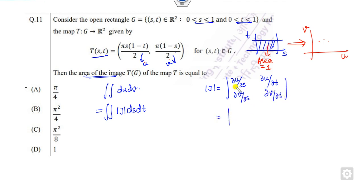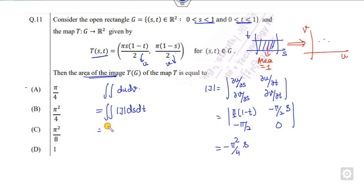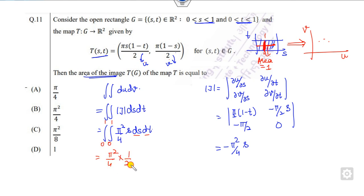What is the derivative of U with respect to s? You can see this is nothing but π/2 of (1 − t), this is minus π/2 · s, this is minus π/2, and this is 0. So what is the Jacobian? It is minus π²/4 · s. You can substitute here: this is π²/4 · s ds dt. Taking limits of s and t from here — t from 0 to 1 and s from 0 to 1 — π²/4 is outside, giving 1/2, so the right answer is π²/8.